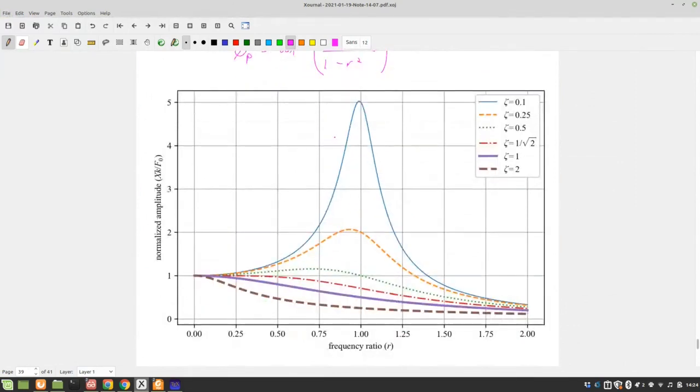All right, so now we have our normalized amplitude response. It's normalized because it's over f_0. So it doesn't matter what your input forcing is. You're always going to get the same normalized response. Does that make sense?